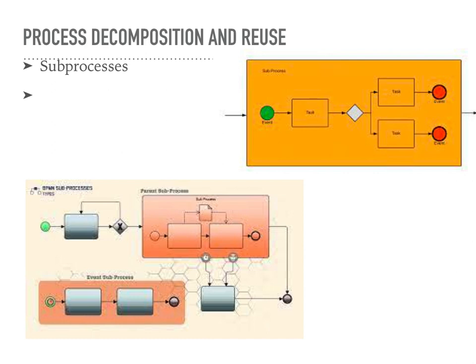In BPMN, subprocesses are used to represent a set of activities or tasks within a business process that have a distinct purpose or can be modeled as a separate, reusable unit. They provide a way to modularize and encapsulate complex logic or repetitive patterns within a process. Subprocesses are self-contained units of activities that can be treated as a separate process within a larger process, used to improve process clarity, manage complexity, promote reusability, and enhance maintainability. There are two main types of subprocesses: embedded and reusable. An embedded subprocess is directly embedded within the main process flow, represented by a rectangular shape with a thicker border, with activities modeled within the main process diagram.